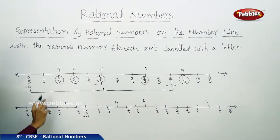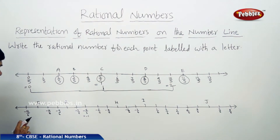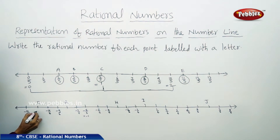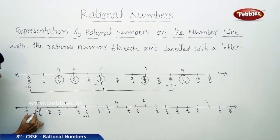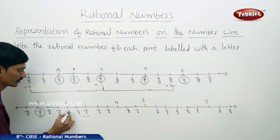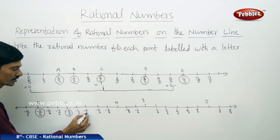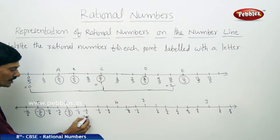In the second number line, all denominators equal 6, meaning each unit has been divided into 6 equal parts. The first part shown is minus 12 by 6, and immediately after is minus 11 by 6 — represented by F. Then minus 10 by 6, minus 9 by 6, and minus 8 by 6 — represented by G. Then minus 7 by 6 and minus 6 by 6, which equals minus 1.